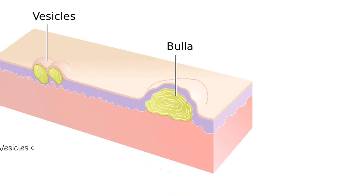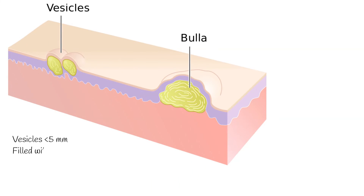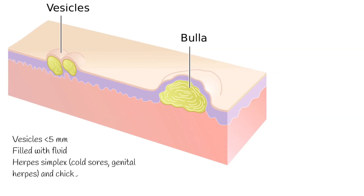Vesicles are less than 5 mm in diameter — circumscribed, elevated lesions filled with fluid. Common examples of vesicle formation are infections such as herpes simplex, cold sores, genital herpes, and chickenpox.